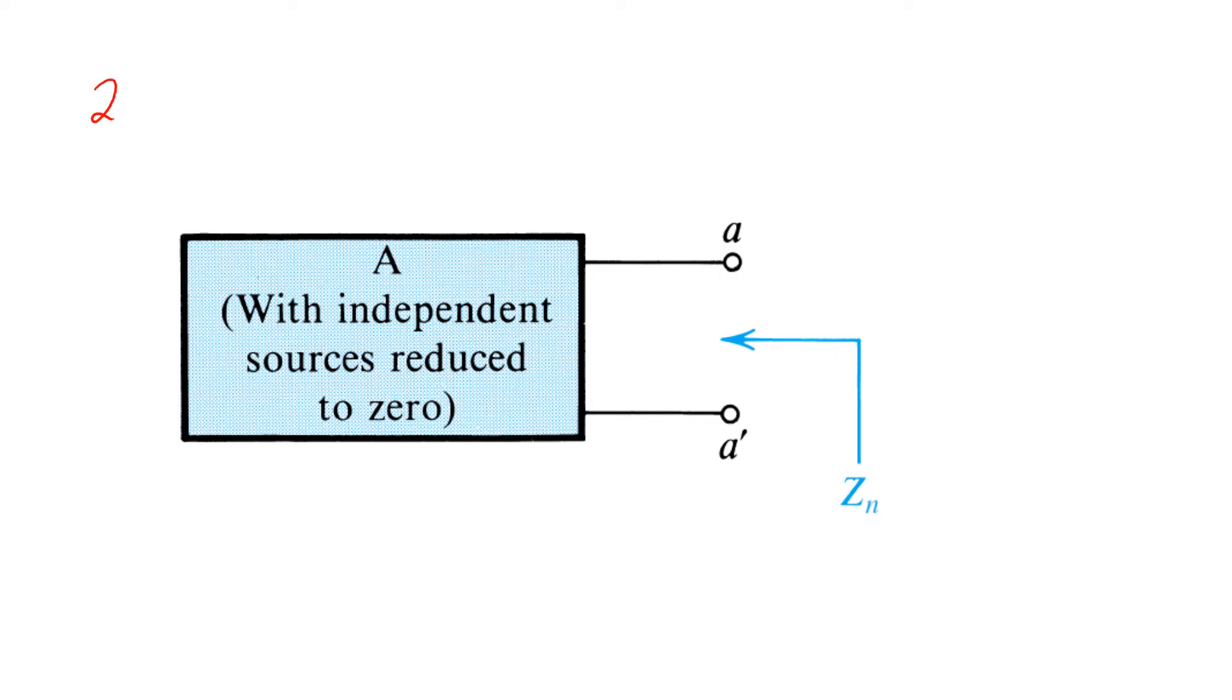Step two is to find the impedance Zn. This is done in very much the same way as finding the impedance Zt for the Thevenin equivalent. We start by setting all the independent sources in A to zero.